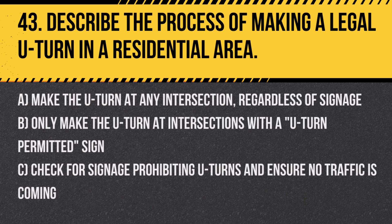Question 43: Describe the process of making a legal U-turn in a residential area. A. Make the U-turn at any intersection, regardless of signage. B. Only make the U-turn at intersections with a U-turn permitted sign. C. Check for signage prohibiting U-turns and ensure no traffic is coming. Answer: C. Check for signage prohibiting U-turns and ensure no traffic is coming. This ensures the maneuver is made safely and legally.